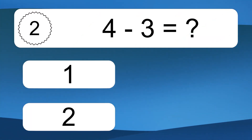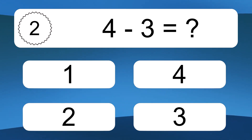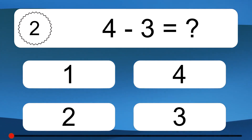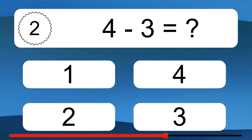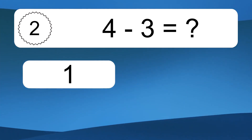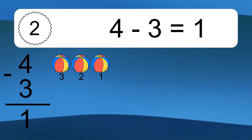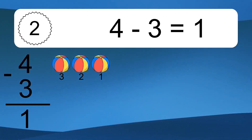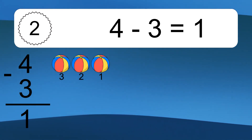4 minus 3 equals what? 4 minus 3 equals 1. Let's count it. 3, 2, 1.